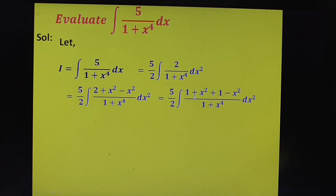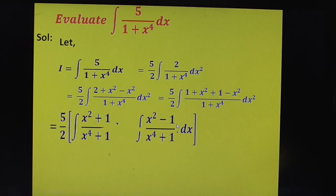After this, separate this fraction. 1 plus x square by 1 plus x power 4 is the first term. The second one is 1 minus x square by 1 plus x power 4. Observe the next step.